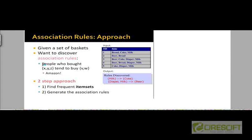For example, we want to discover rules like: people who bought items X, Y, and Z also tend to buy item V and also item W. If you purchase books from Amazon based on your past purchase history, Amazon can use such association rules to generate recommendations for what other items you may want to buy, given that you have expressed interest in or already bought items X, Y, and Z. This applies not only to brick-and-mortar stores like Safeway, but also to online stores like Amazon.